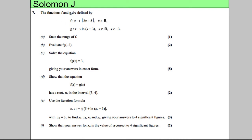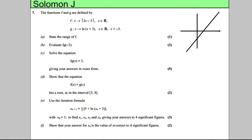We've got two functions F and G. F is the modulus of 2x subtract 5, and G is the natural logarithm of x add 3. State the range of F. Now this should be quite straightforward — you know that modulus graphs, when you take the modulus of a linear function, if this was 2x subtract 5, it would look something like this.